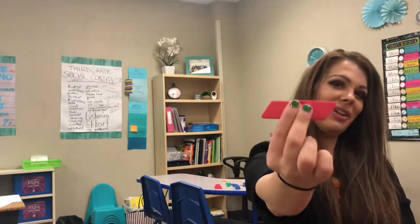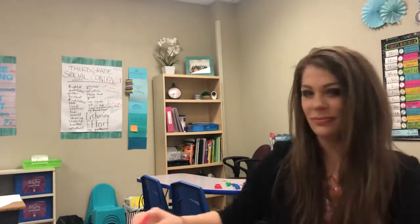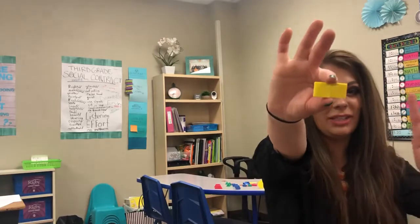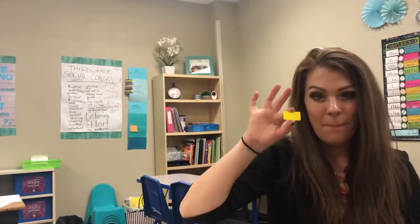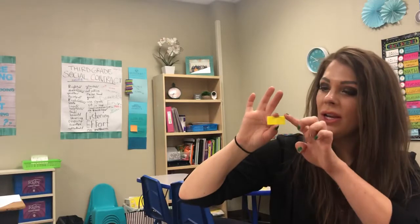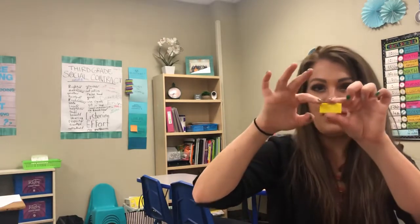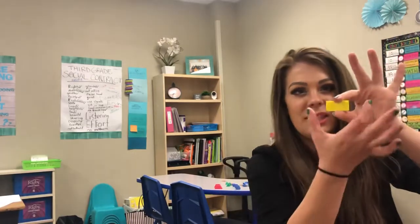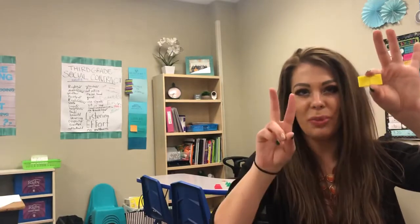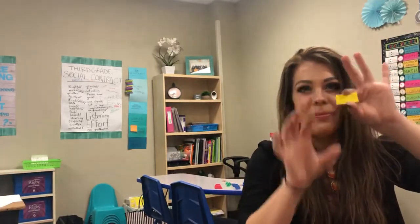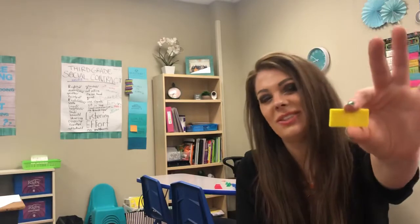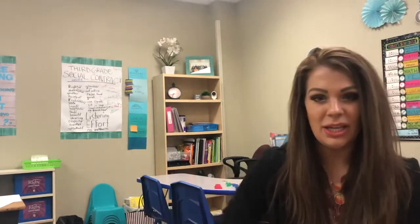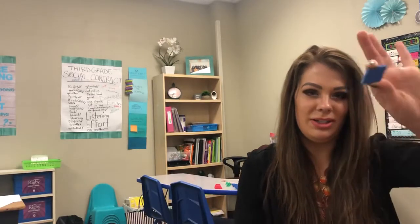This is our parallelogram. Next we have our rectangle. Our rectangle has four right angles — one, two, three, four — but not all sides are the same length. These two are the same and these two are the same, so we have two pairs but they're different sizes. Here's our rectangle.